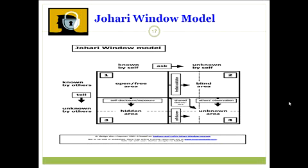The Johari Window is another cognitive psychological tool, created by Joseph Luft and Harry Ingram in 1955 in the United States, to help people better understand their interpersonal communication and relationships. In performing this exercise, the subject is given 55 adjectives and picks five or six that they feel describe their own personality, and peers of the subject are then given the same list and each picks five or six adjectives describing the subject. The results are then placed in quadrants — for example, the Arena quadrant, which represents the traits that both the subject and the peers are aware of.